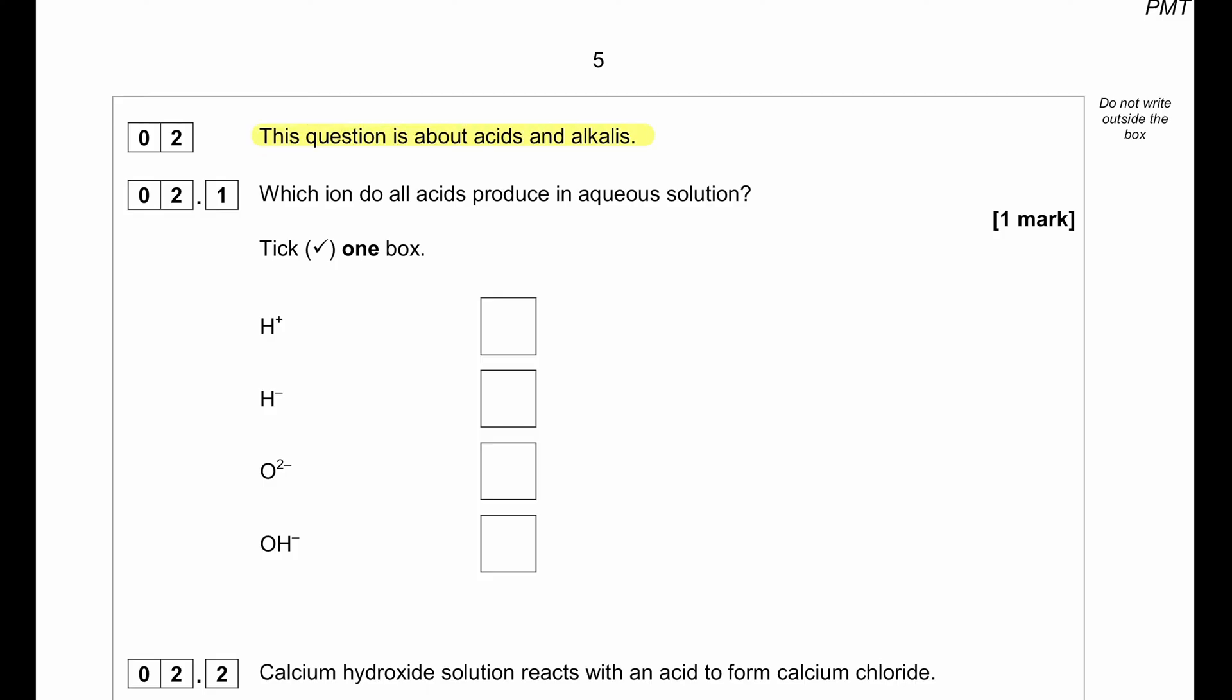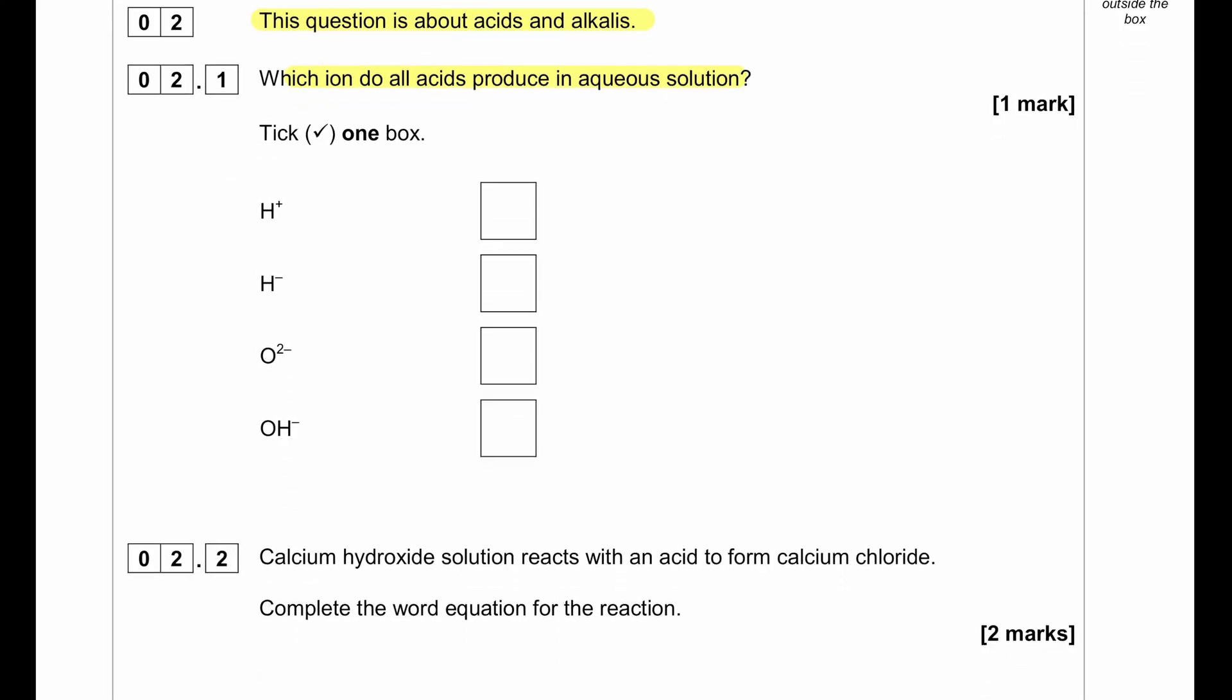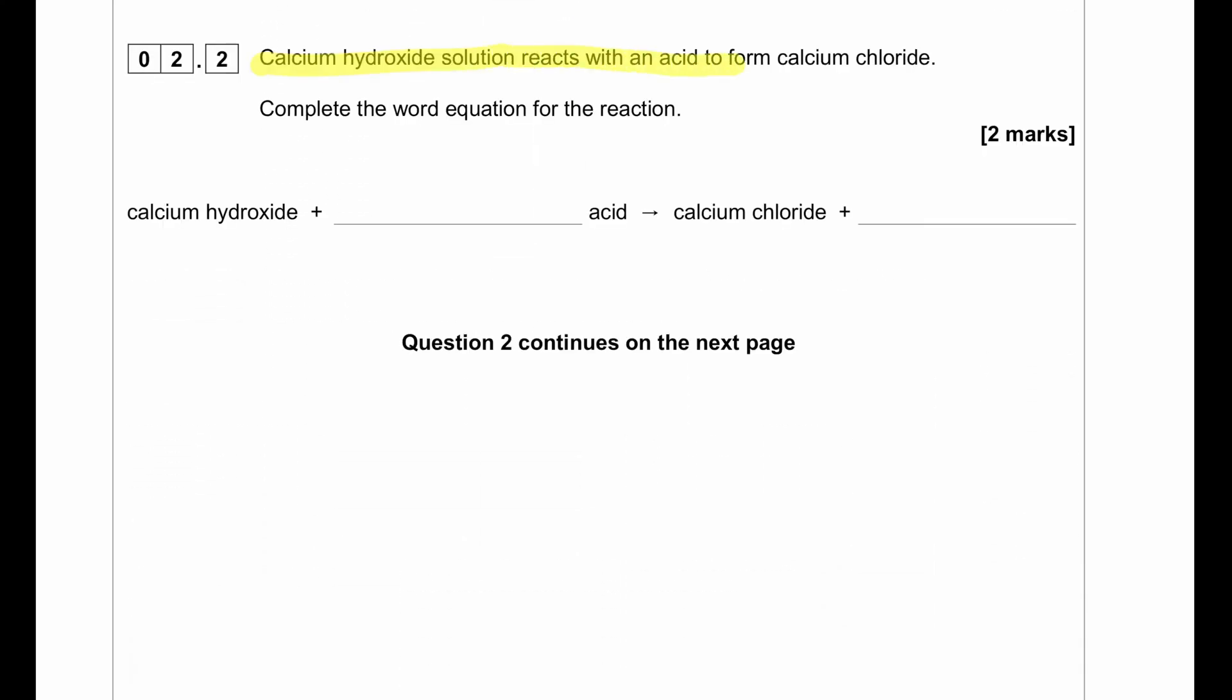This question is about acids and alkalis. Which ions do all acids produce in aqueous solution? Acid means H plus ion. Calcium hydroxide solution reacts with an acid to produce calcium chloride. We need to complete the word equation. Whenever we are making the salt chloride we have to have hydrochloric acid. Calcium chloride and water will be produced.